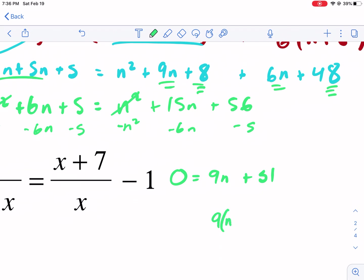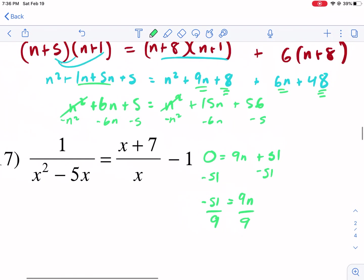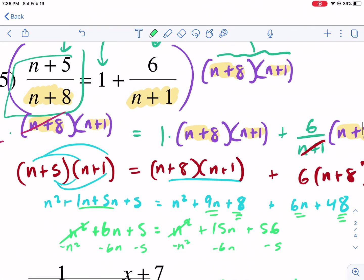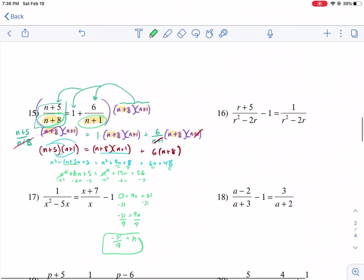Now I'm going to try to get everything over to one side. Subtracting n², subtracting 6n gives me 9n on the right side, and subtract 5. We have 9n plus 51. This is just a two-step equation. So 9n equals negative 51, then divide by 9. N equals negative 51/9. We do have to check for extraneous roots. Our answer can't be negative 1 or negative 8, and it's not. So we're fine with n being negative 51/9. That was 15.